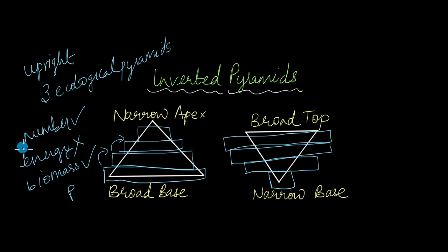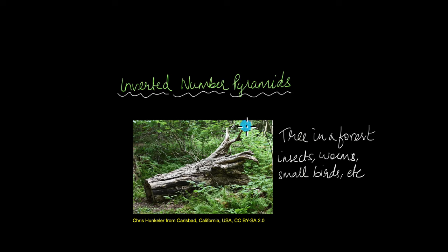How can an inverted number pyramid form? Let's first take a look at that. So here we have a tree in a forest. Now this tree is a single individual of course in the forest, but it's going to support a variety of primary consumers and even secondary consumers like insects, worms, small birds, etc. So the number of these primary and secondary consumers is definitely going to be more than one.